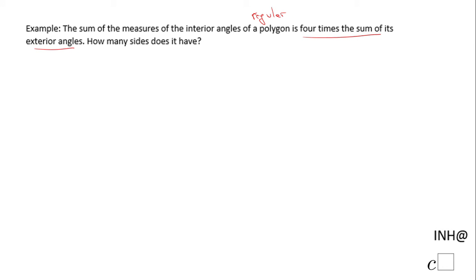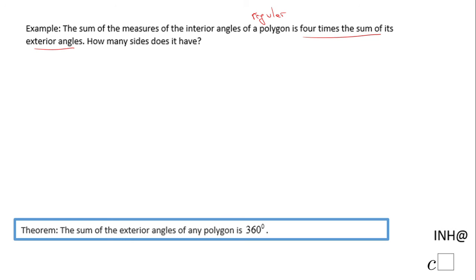For that reason I'm going to use first this theorem which says the sum of the exterior angles of any polygon is 360 degrees. So again, sum of exterior angles is 360, and we have four times this sum. So the first thing I'm going to do is four times 360 and that will be 1440.